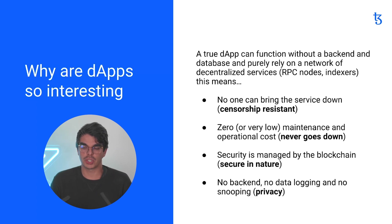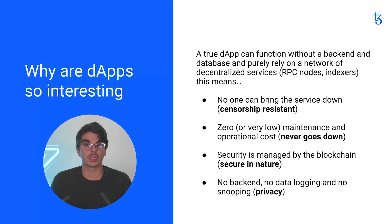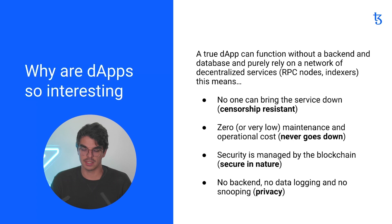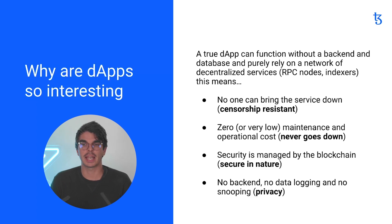So returning to the bullet points on the slide itself, we can see that we've broken it down into four points that really summarize what I was just saying. With a DAP, the advantages are that no one can bring the service down, it has zero or very low maintenance and operational costs. The security of your application is managed by the blockchain — the blockchain has built within it security protocols, so you don't have to interact with external security and authentication applications and services. And finally, because there's no back end, there's no data logging that might be going on that we're unaware of, and no snooping, and that helps us maintain our privacy.